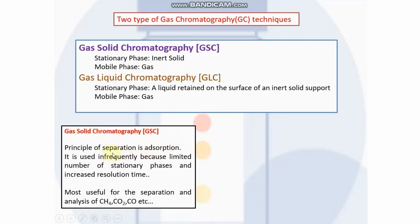In gas solid chromatography (GSC), the principle of separation is adsorption. It is used infrequently because of the limited number of stationary phases and increased resolution time. Generally, GSC is used for the separation of simple gases like methane, carbon dioxide, carbon monoxide, nitrogen oxides, etc.